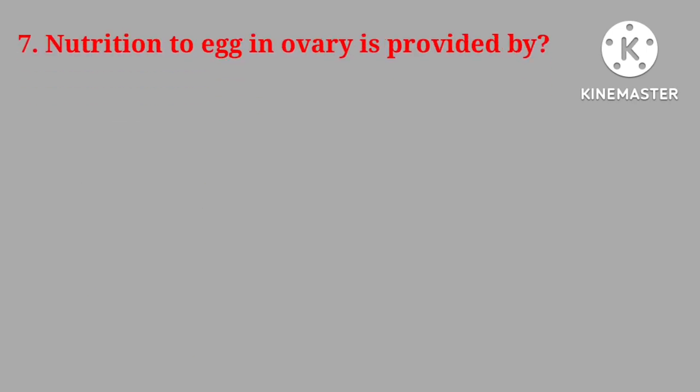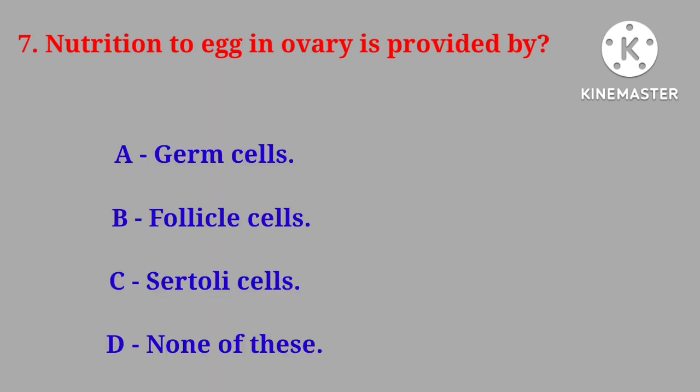Question No. 7: Nutrition to egg in ovary is provided by: germ cell, follicle cell, Sertoli cell, or none of these. Correct answer is follicle cell.